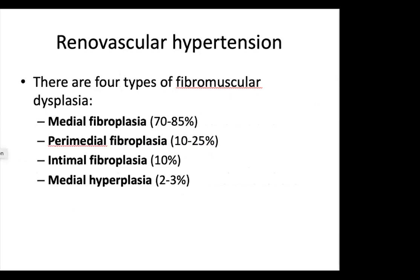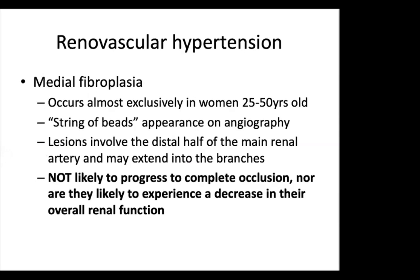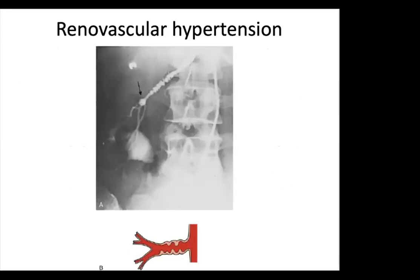There are four types of fibromuscular dysplasia, the principal cause of renal artery stenosis: medial fibroplasia, perimedial fibroplasia, intimal fibroplasia, and medial hyperplasia. Medial fibroplasia is the most common type, occurring almost exclusively in women aged 25–50, with a string-of-beads appearance on angiography involving the distal main renal artery. Large beads are characteristic, and it does not progress to complete occlusion nor result in decrease of overall renal function.